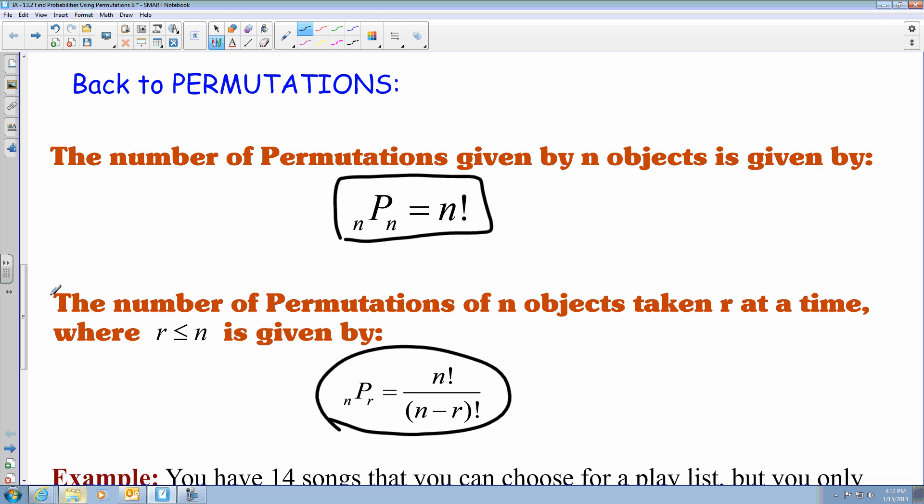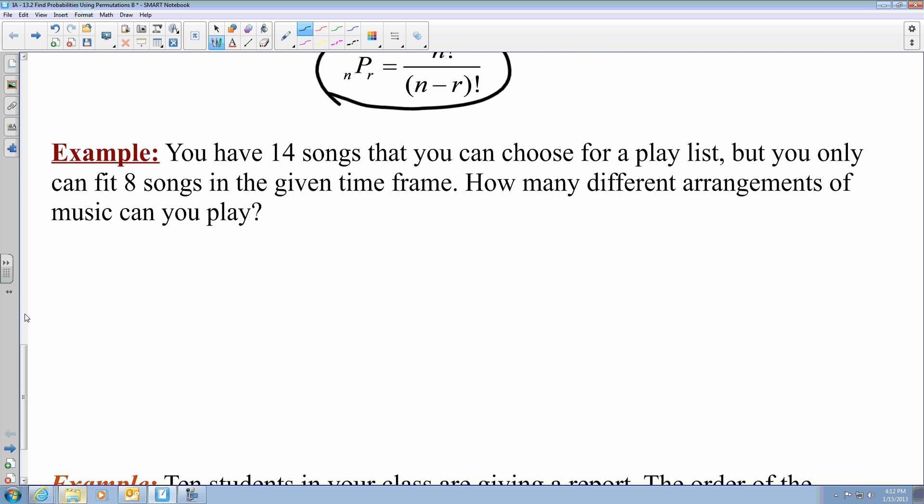Some of that may seem a little bit complex, so let me show you an example. Here is an example: you have 14 songs that you can choose for a playlist, but you can only fit eight songs in the given time frame. We want to know how many different arrangements of music can you play. So you have 14 songs in your playlist, like an mp3 player or something, and you have a device that can only hold eight songs at a time. But you can hold whatever in track one, track two. That can be different in any type of situation that you choose. So they want to know how many different arrangements can there be.